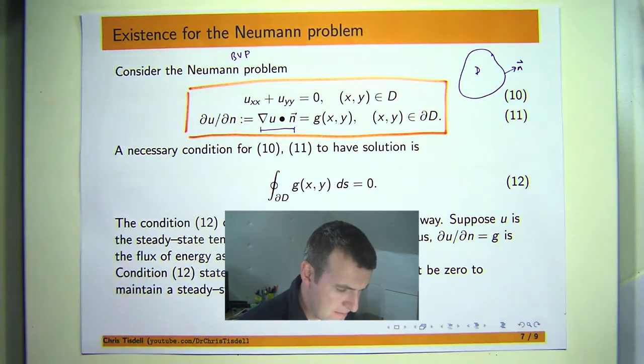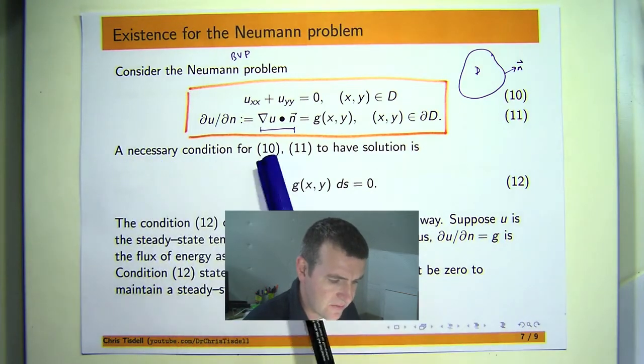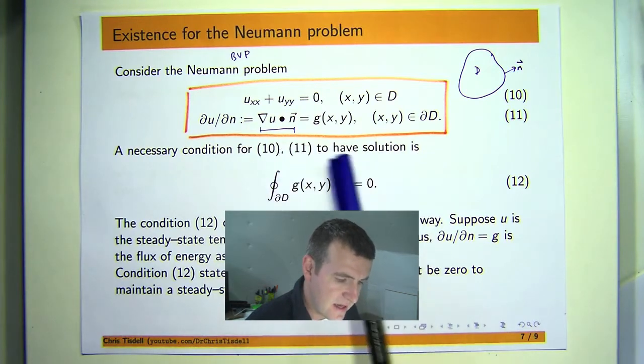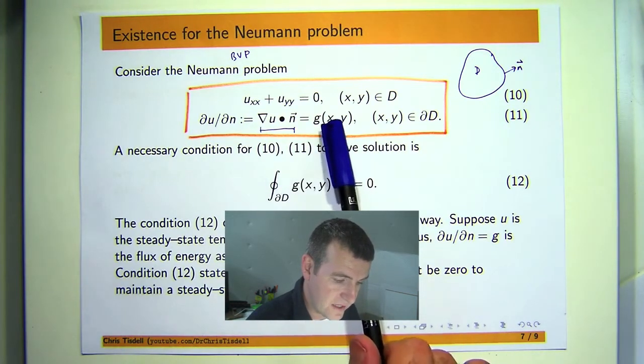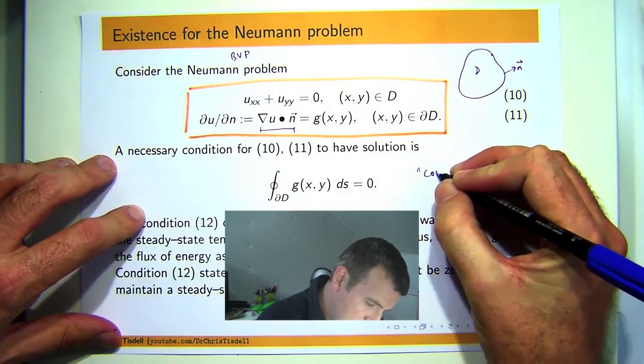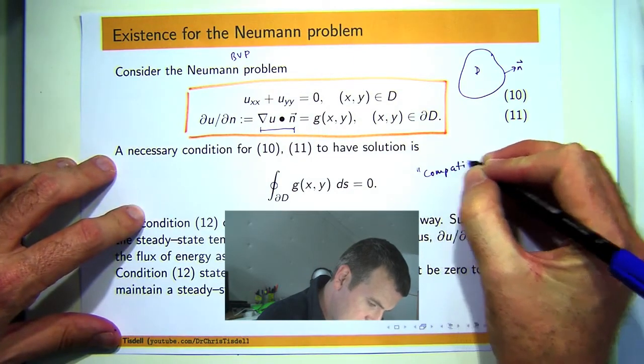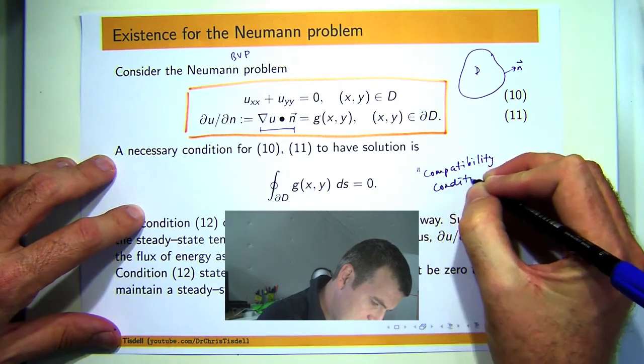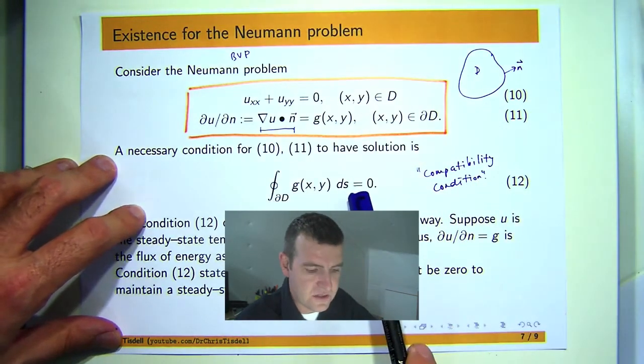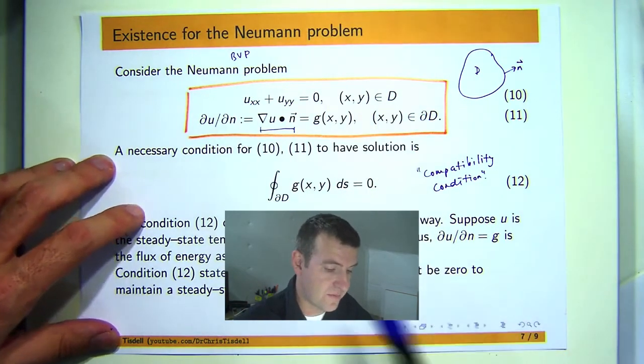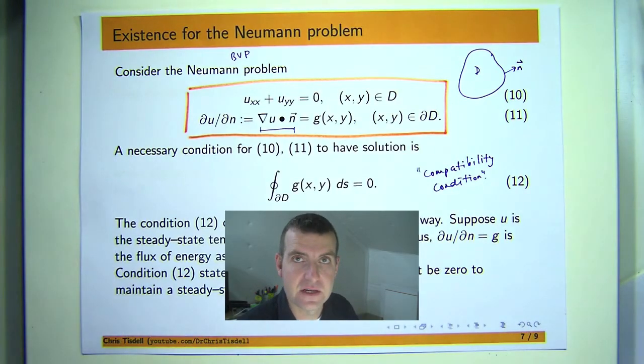I'm going to show you that a necessary condition for this boundary value problem to have a solution is that this line integral involving the g function here must be zero. This kind of condition is known as a compatibility condition. Because if this is not satisfied, for example if this line integral is not zero, then the problem cannot have a solution.